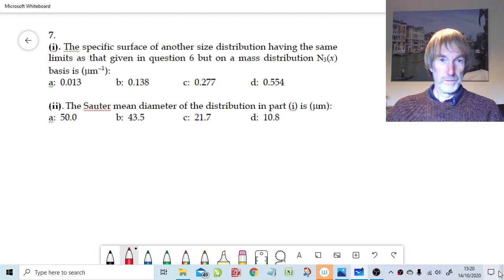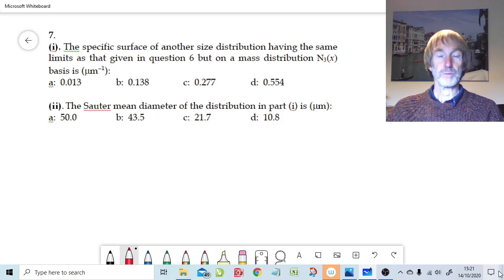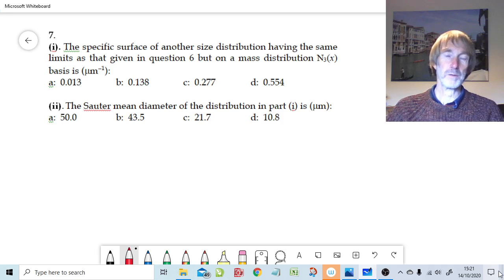Welcome to question 7 from chapter 2 from the book Fundamentals of Particle Technology. Over the past few questions we've been looking at distributions and tabular data. Question 7 follows on from question 6 where we calculated the specific surface of a distribution from the continuous function information.